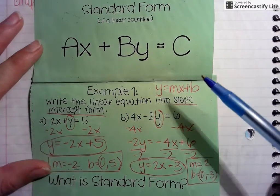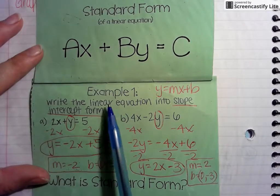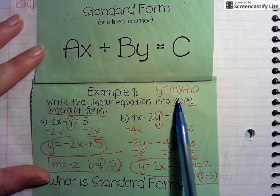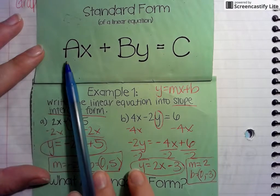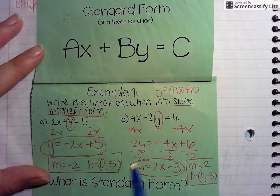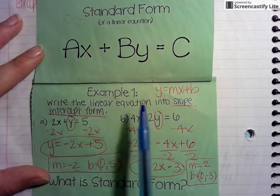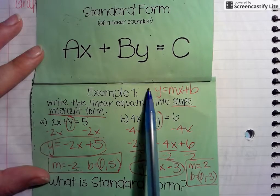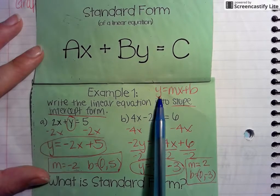This is an example of switching a linear equation from standard form into slope-intercept form. Standard form is always ax plus by equals c, and to get it into slope-intercept form, you need to get it into y equals mx plus b, so you have to get y by itself.